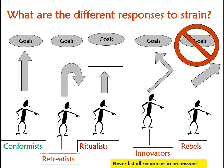Let me run through the different responses to strain according to Merton. The conformists accept the goals of material wealth and accept the legitimate means - working hard in school and the workplace. Then you have the retreatists: they still want the goal of material wealth but have completely given up on the means, not believing they'll ever achieve it. They isolate themselves, turn to drink and drugs, and hang out with others who've also retreated from mainstream society - a more deviant, self-harming response.